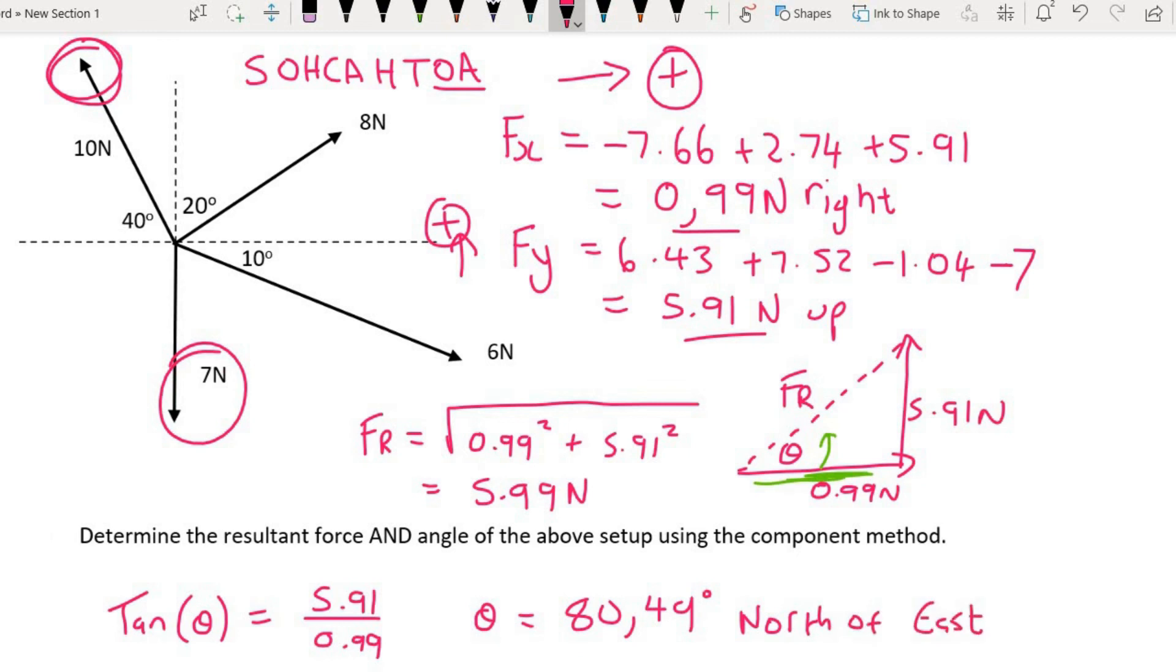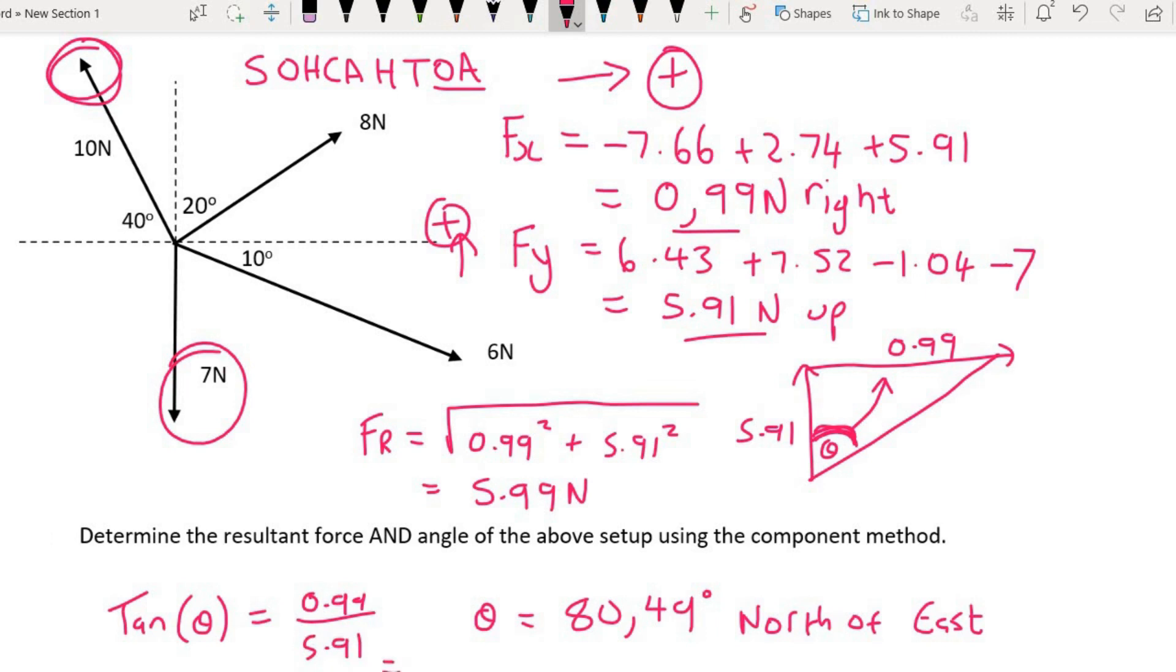But now there are some of you at home who probably did it in a different way. You might have said it's going up and then it's going to the right. The up is 5.91 and the right is 0.99. Now all of a sudden your angle is over here. That's also correct. You would say that your tan theta is equal to the opposite which is 0.99 over the adjacent which is 5.91. That would give you 9.51 degrees. But now you are measuring going like that, so you are going to the right which means east of this vertical line which is a north line. So that's another way you could have answered that.